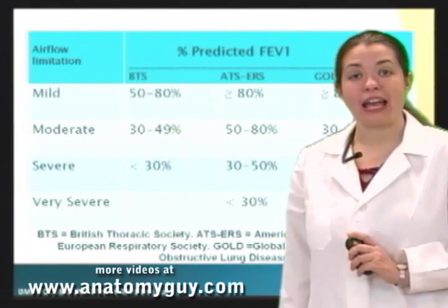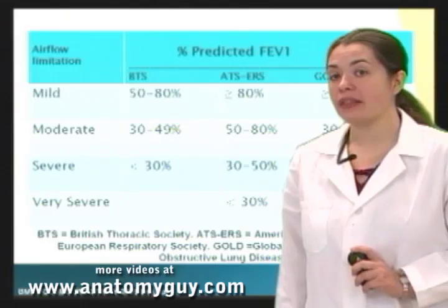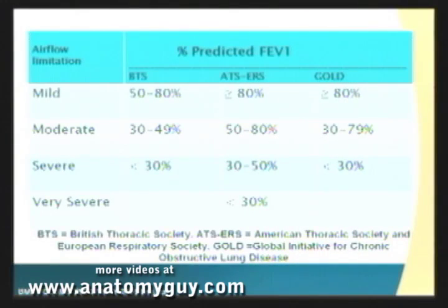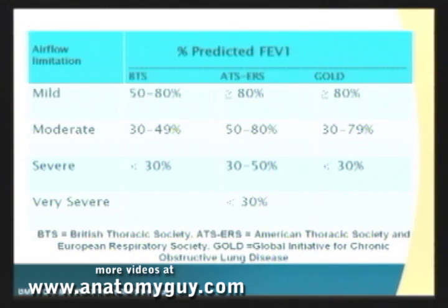We can use our percent-predicted FEV1 to help classify how bad the airflow limitation is. Keep in mind that these percentages are based on age, height, gender, weight, and race, and your spirometry machine will usually give you those values. We have a few different definitions of COPD: the BTS (British Thoracic Society), the ATS/ERS (American Thoracic Society and European Respiratory Society), and GOLD (Global Initiative for Chronic Obstructive Lung Disease). For mild airflow limitation by BTS, percent-predicted FEV1 is about 50–80%. For moderate disease it drops to 30–49%, and for severe disease it's less than 30%.